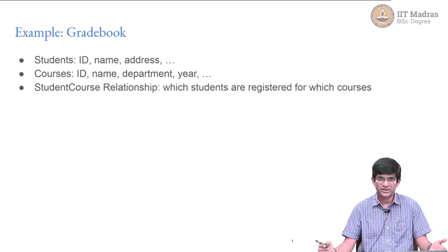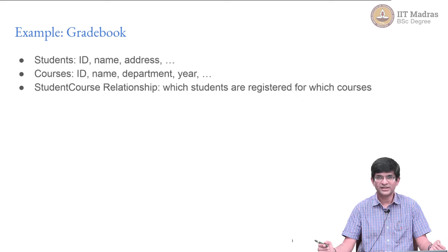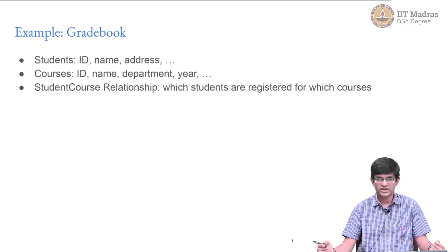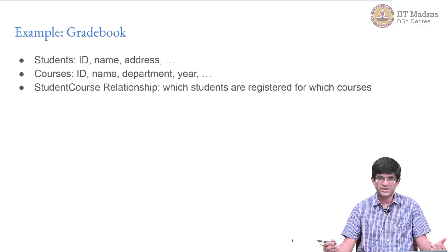Courses could also have additional information associated with them — they might be associated with certain departments, or offered in a particular year. As far as we are concerned, the main thing we are trying to model is the relationship between students and courses. In other words, I can talk about a student taking a course, or I can ask for the list of students registered for a given course. One student and one course can be associated with each other, meaning that student is registered for that course. That is the simple application we are considering, and we will use it to motivate our examples using the models.